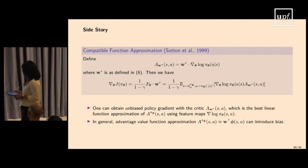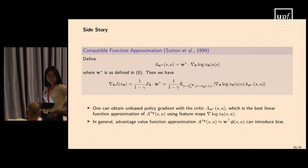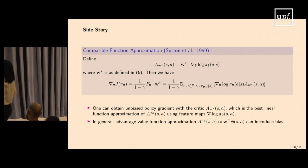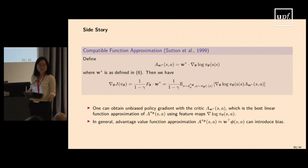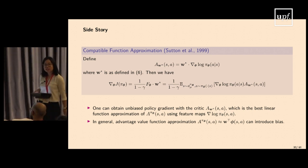Q&A: Was the state visitation frequency formulation introduced specifically to connect with the Fisher matrix? Mostly it's a mathematical convenience — it makes connections clearer and enables different gradient estimation strategies. Another question about w* and θ: w is the parameter for estimating value functions, while θ parameterizes the policy. They are two separate parameters — you estimate Q-functions with w, then plug into the policy gradient theorem to construct the policy gradient.